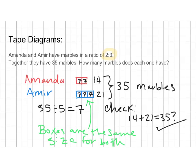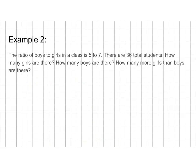Let's try another example. The ratio of boys to girls in a class is five to seven, and there are 36 total students. How many girls are there? How many boys are there? And how many more girls than boys are there? This is very similar to the last one — pause and try it if you think you understand, or keep watching if you're still confused. I'll start by making five boxes for the boys and seven boxes for the girls.